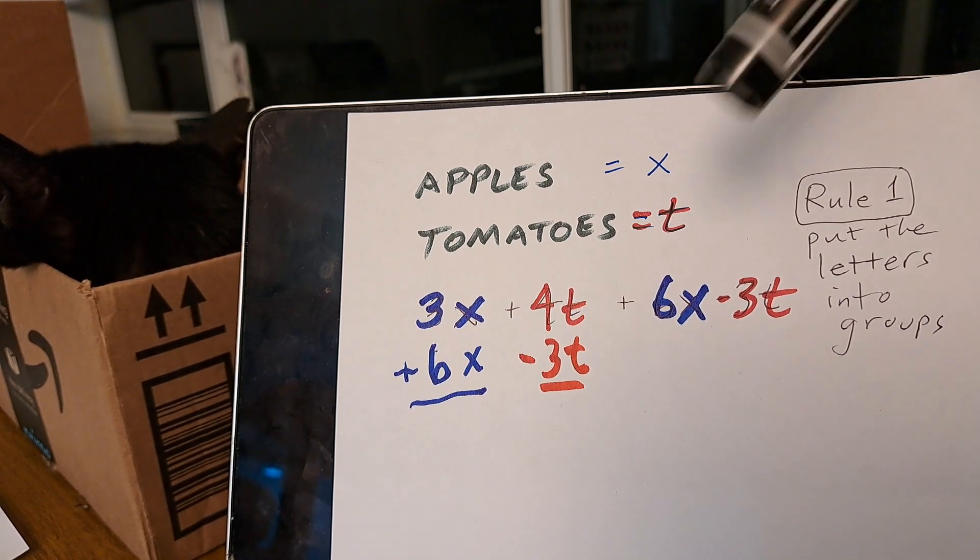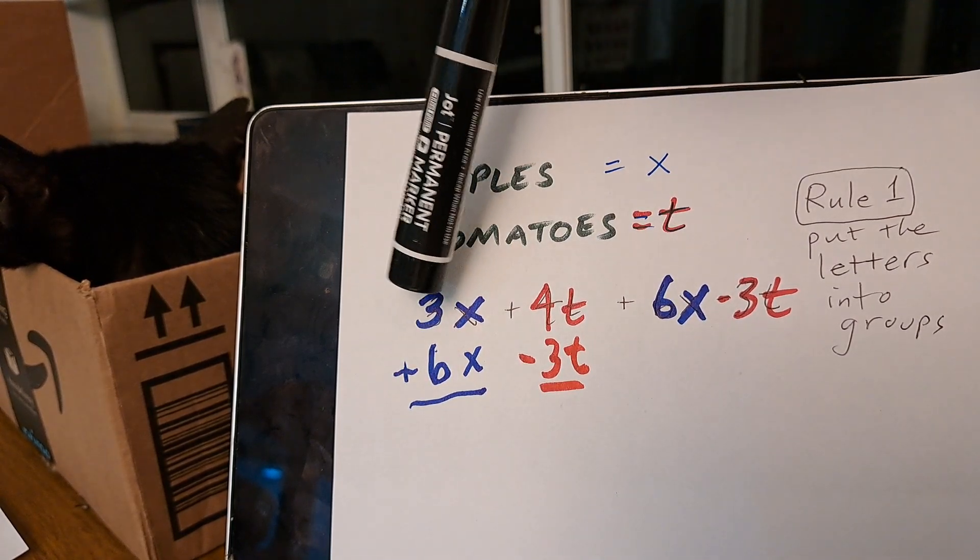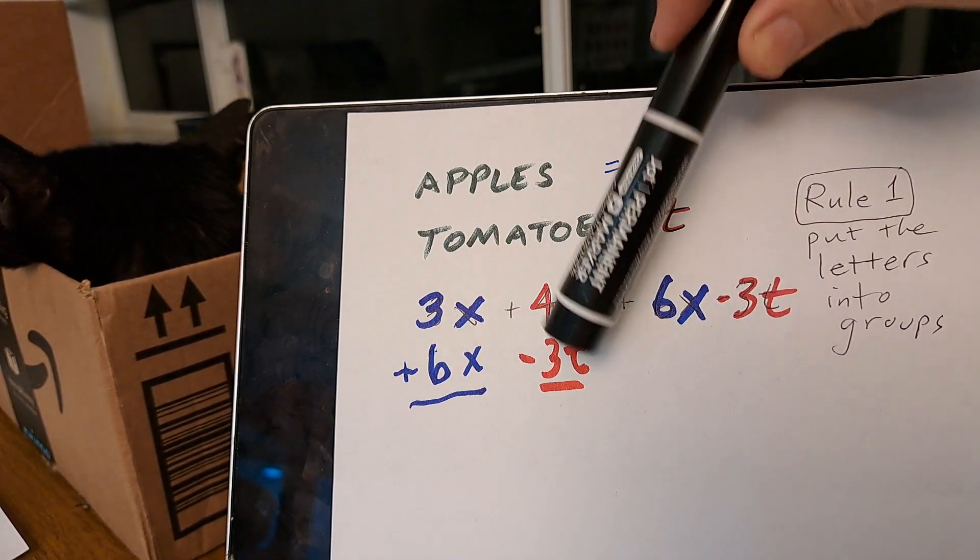So the first thing to do is to notice we don't have to rewrite everything. Just bring the 6x under and then the 3t goes under the Ts.